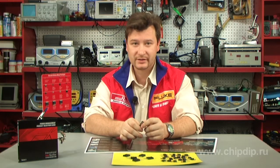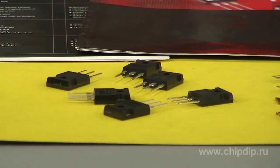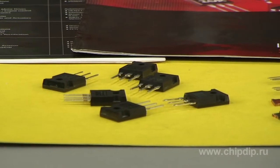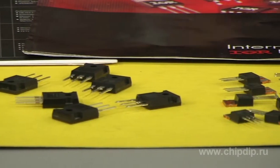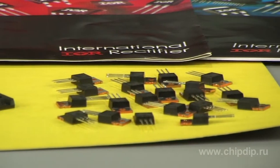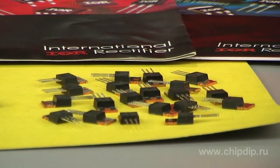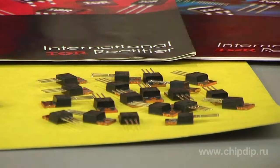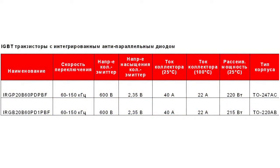Two examples of transistors in this series are the IRGP20B60PDPBF and RGB20B60PD1PBF. The switching time is very close to that of the power field effect transistors, and it doesn't compromise the excellent conductivity properties of IGBT.